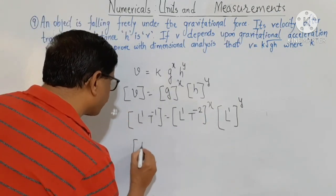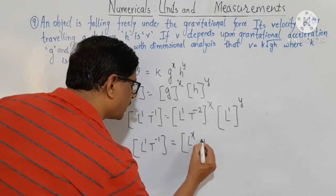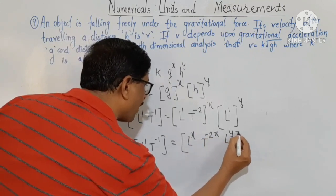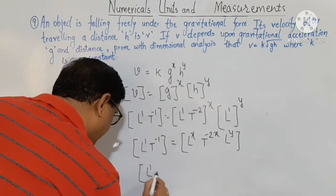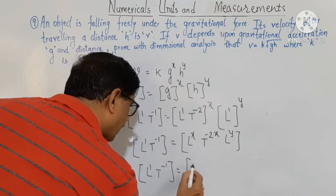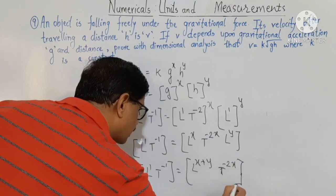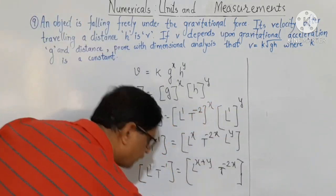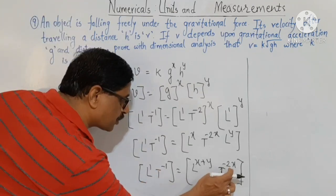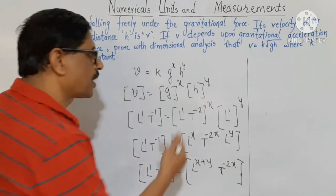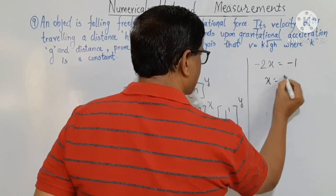Writing it out: L1 T minus 1 equals L raised to (x+y), T raised to minus 2x. Comparing powers of T on both sides: minus 2x equals minus 1, therefore x equals 1/2.